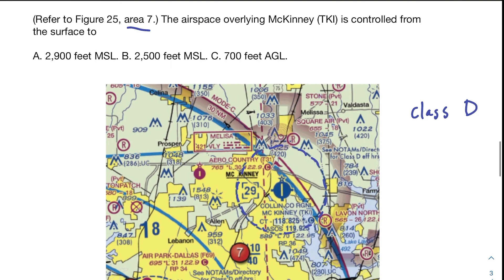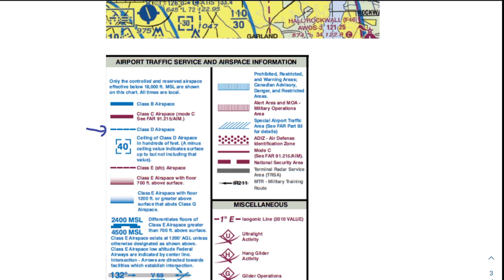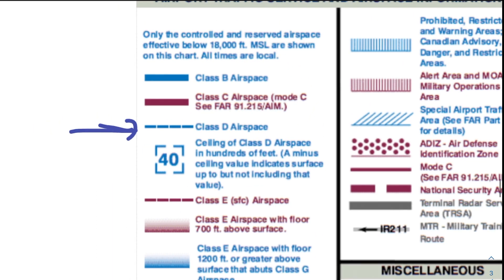What is the question asking us for? It's asking that it's controlled from the surface to what — so what we're asked for is the ceiling of this airspace. The surface is our floor, which we define as zero. So we want to find the ceiling. Just like in the previous problem, the information is right in front of us — we just need to figure out which numbers to pick out of this sectional chart. If we look at our legend, right below the Class D airspace entry there's a very important piece of information. It shows the ceiling of a Class D airspace in hundreds of feet inside a broken square symbol.